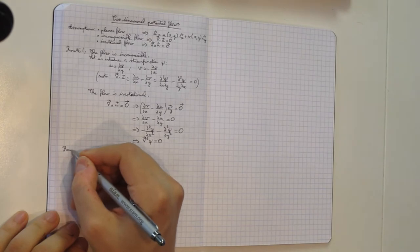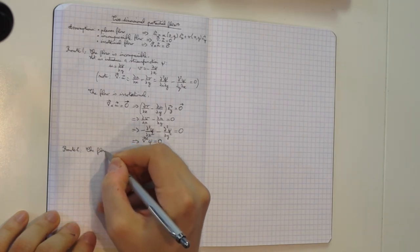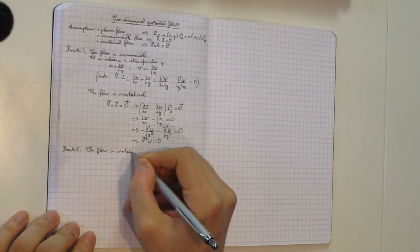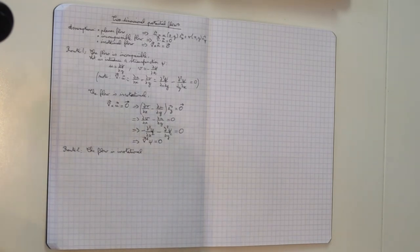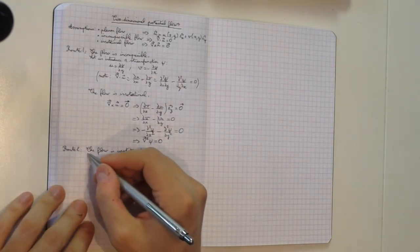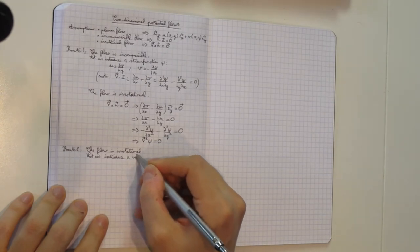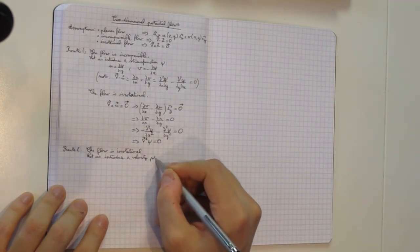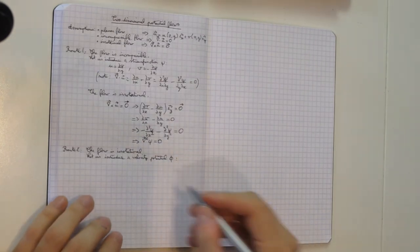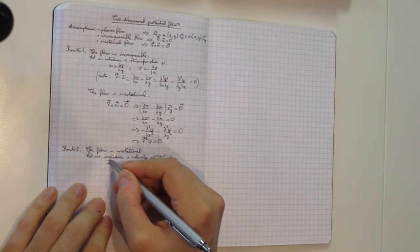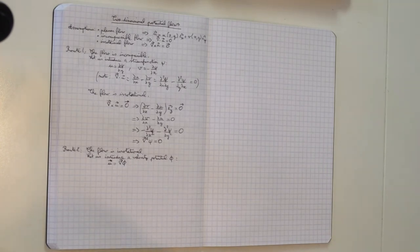Route two will start off by saying that the flow is irrotational — we're imposing that the curl of the velocity is zero. Because of that, we can introduce a velocity potential, which I'll call phi. The definition is that the velocity vector is the gradient of the potential, just like any potential theory in classical physics.